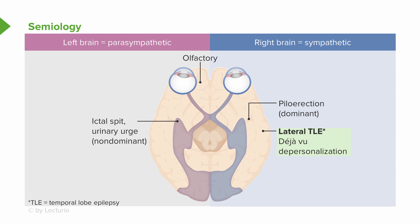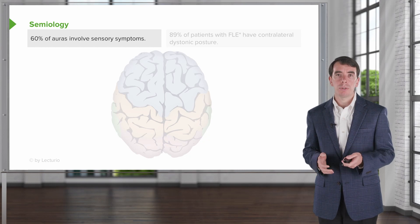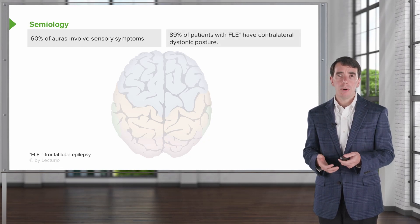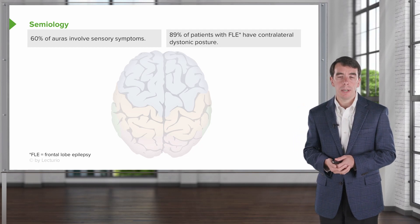Deja vu is a not uncommon aura for temporal lobe epilepsy, as you see here. In the medial temporal lobe — either right or left — we can see abdominal symptoms: a rising nausea or abdominal fear associated with abdominal discomfort, and that can be a symptom seen from seizures arising from the medial temporal lobes. About 60% of auras involve sensory symptoms, so sensory symptoms are extremely common. Somewhere around 90% of patients with frontal lobe epilepsy will have contralateral dystonic posturing.